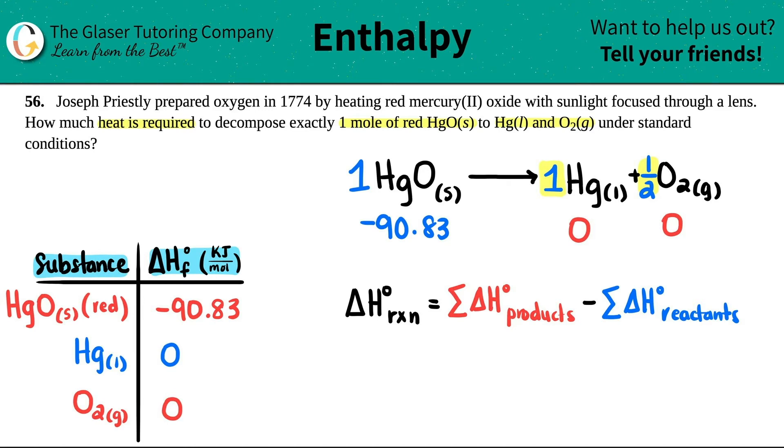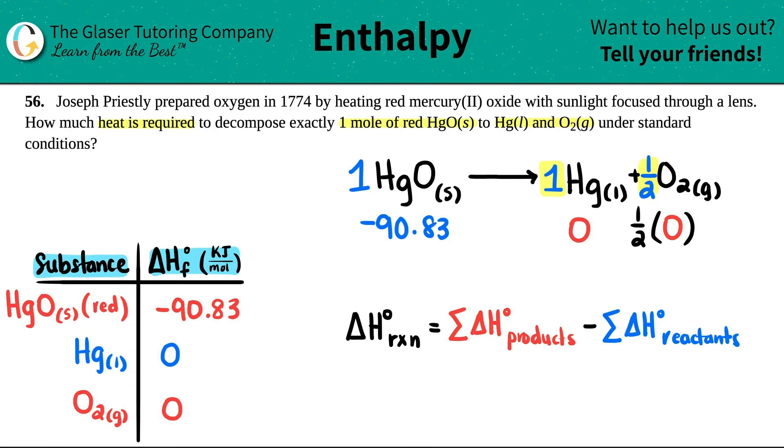Now, the next step is technically you would multiply each number by how many you have in the coefficient. The only one that's not a one is the O2, right? I have a half here. So I'm just going to show you guys that technically you should times this by a half. But I mean, times it by a half is just zero. So I'll just rewrite them again. So this is still zero. And this is now negative 90.83. And now we're ready to group them all together.